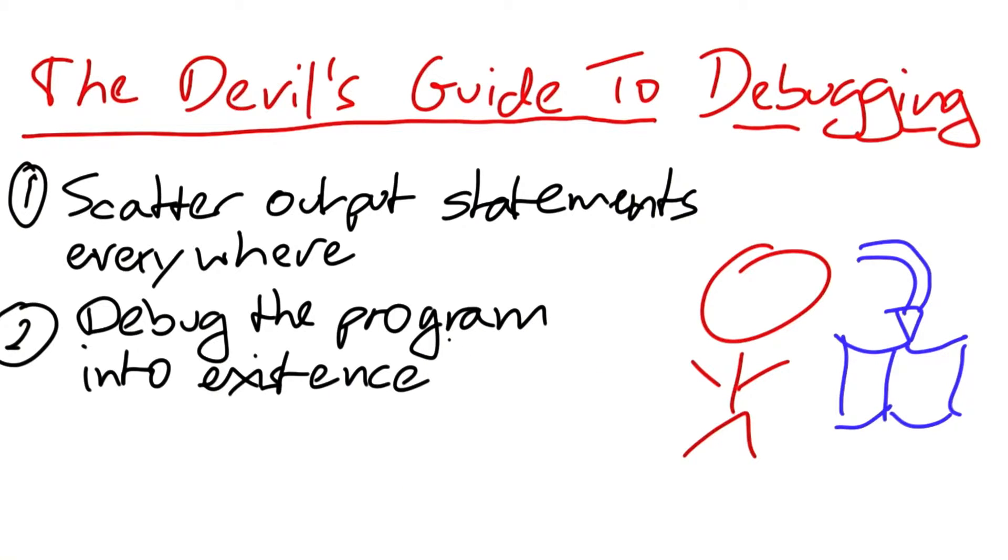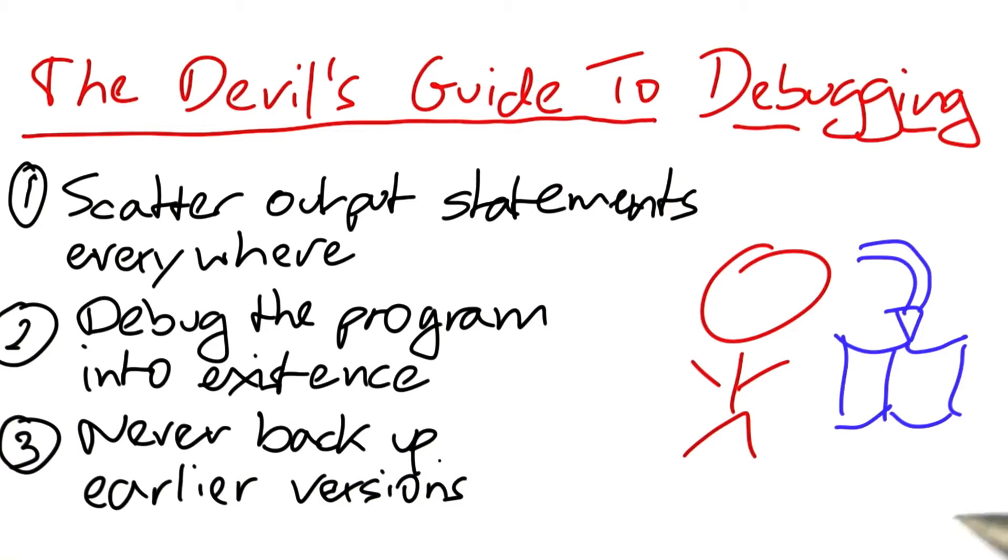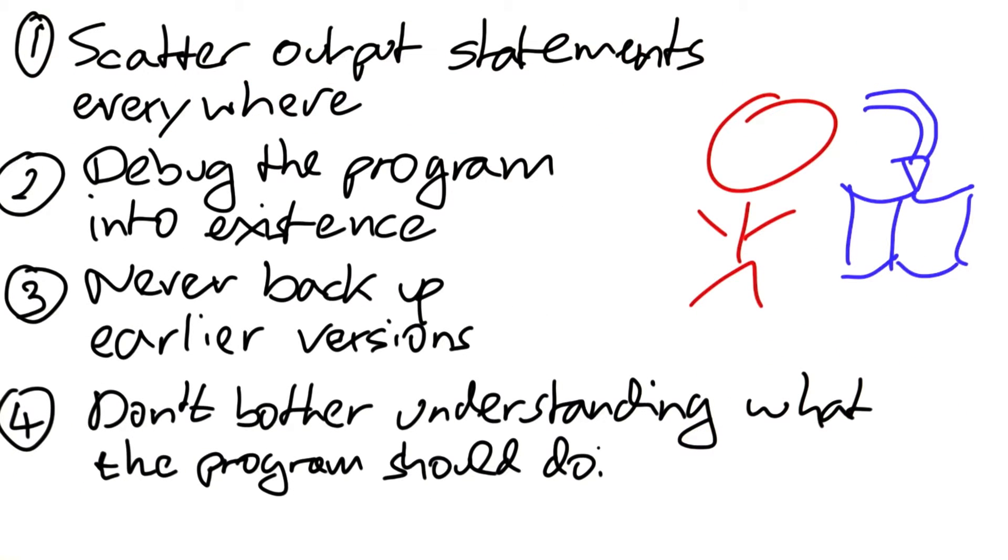The second one is to debug the program into existence. Just keep adding statements and removing statements until it works. Never backup earlier versions of your code. I mean, who can't remember what they've done just seven minutes ago? Rule number four,